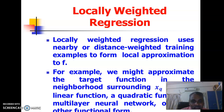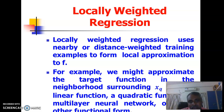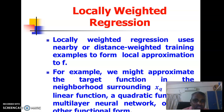For example, we might approximate the target function in the neighborhood surrounding x_q using a linear function, a quadratic function, a multilayer neural network, or some other function form. We have to construct an approximation function using the distance between the query point and other training examples. Once we find the approximation function, we put the value of x_q into it and get some approximate target value.